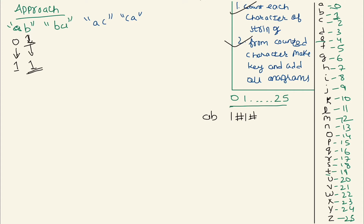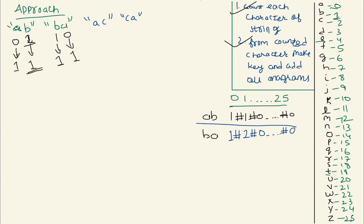If we don't have a character, its count defaults to zero. We continue appending each count with a hash up to index 25. For 'ba', 'b' has value one with count one, and 'a' has value zero with count one — generating the same key as 'ab'. Since both produce the same key, we group 'ab' and 'ba' into one anagram group.